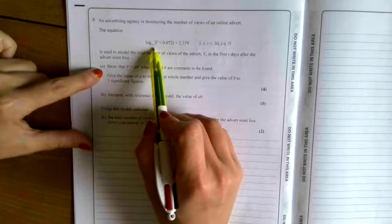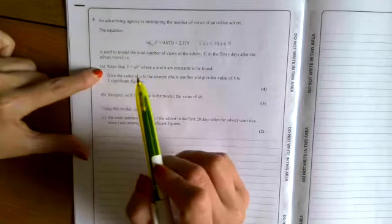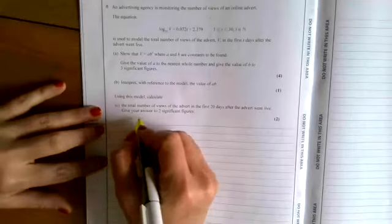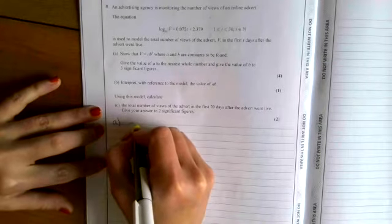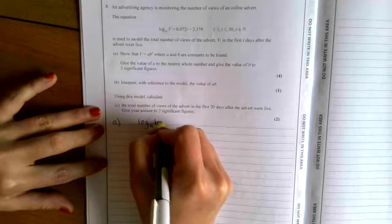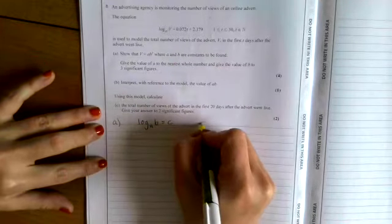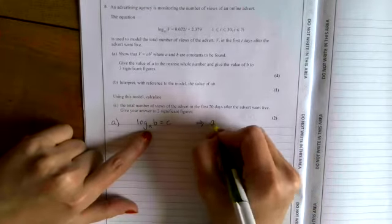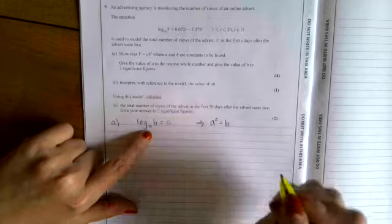rearranging and understanding what a log is. Log to the base 10, we're going to want to take 10 to the power of both sides. The key to all of this is remembering that log to the base A of B equals C. The relationship between A, B and C is that A to the power of C equals B.